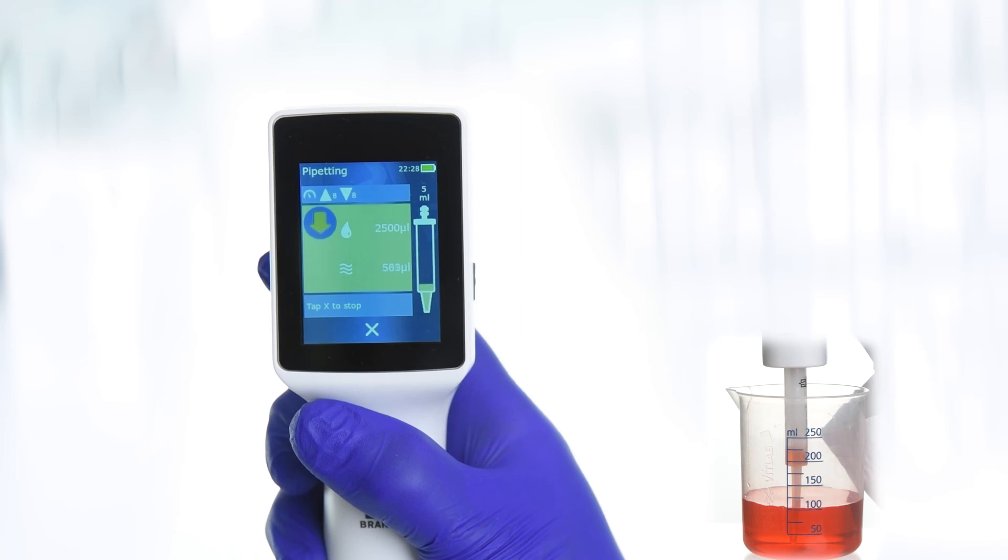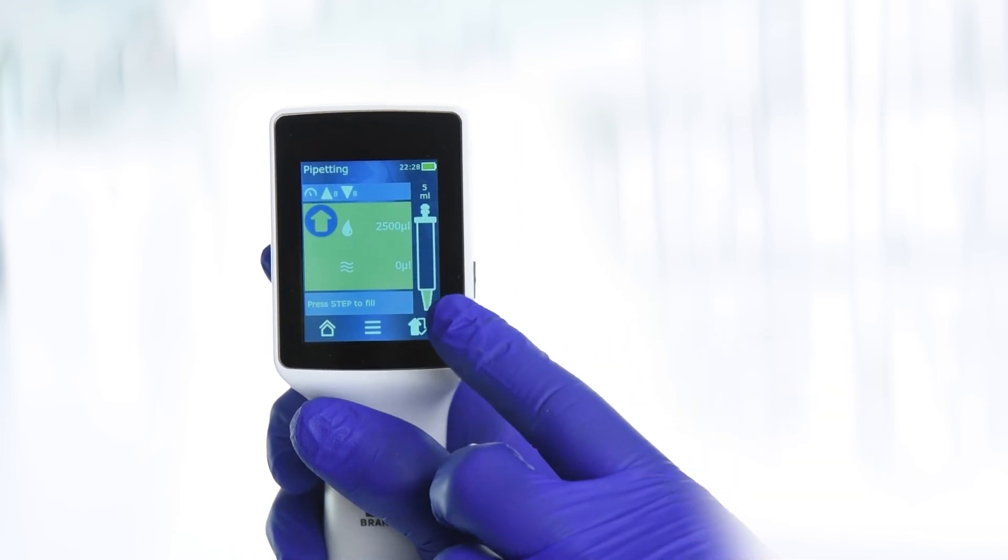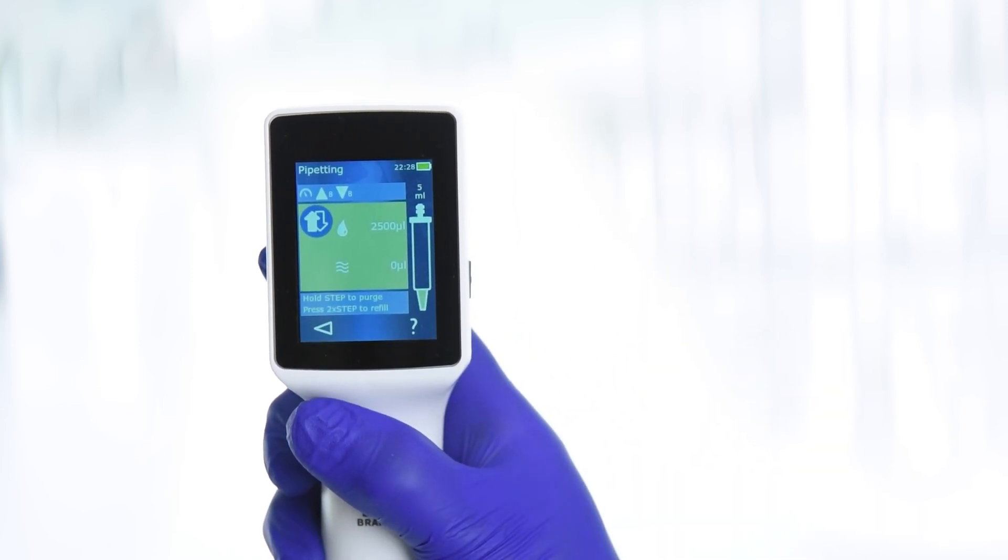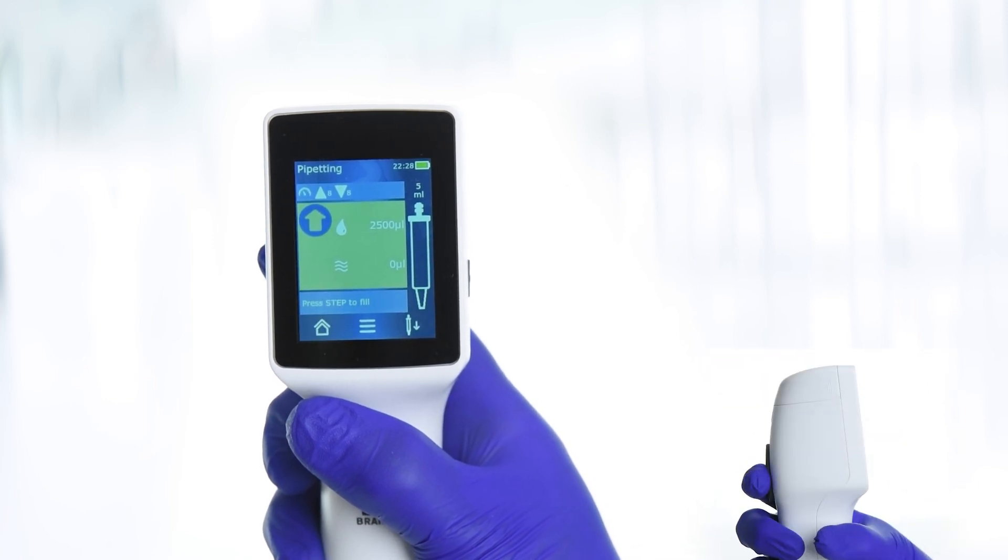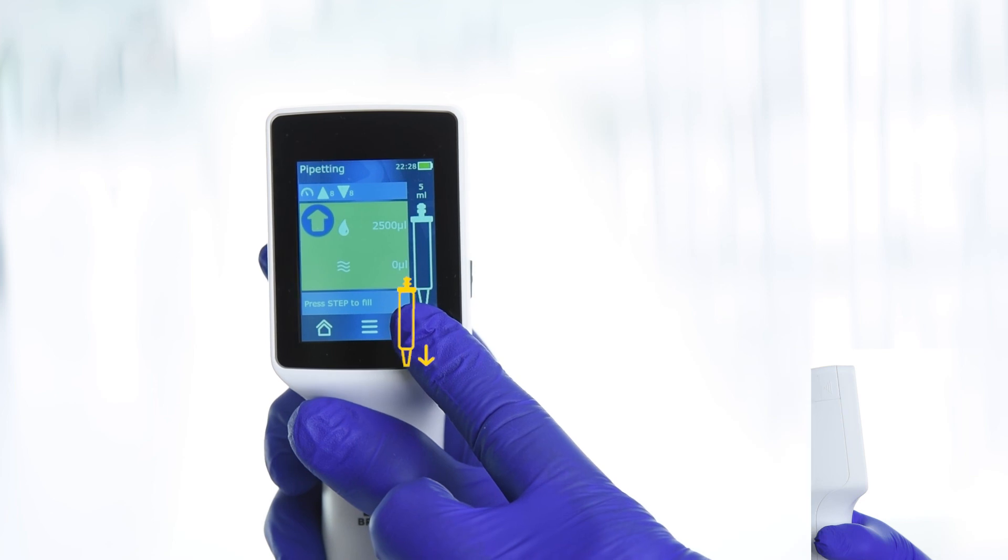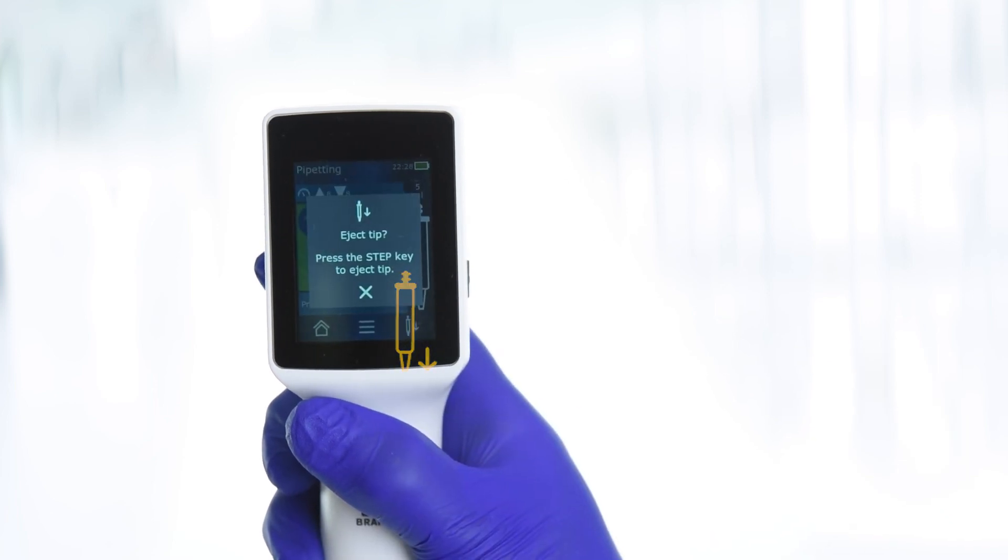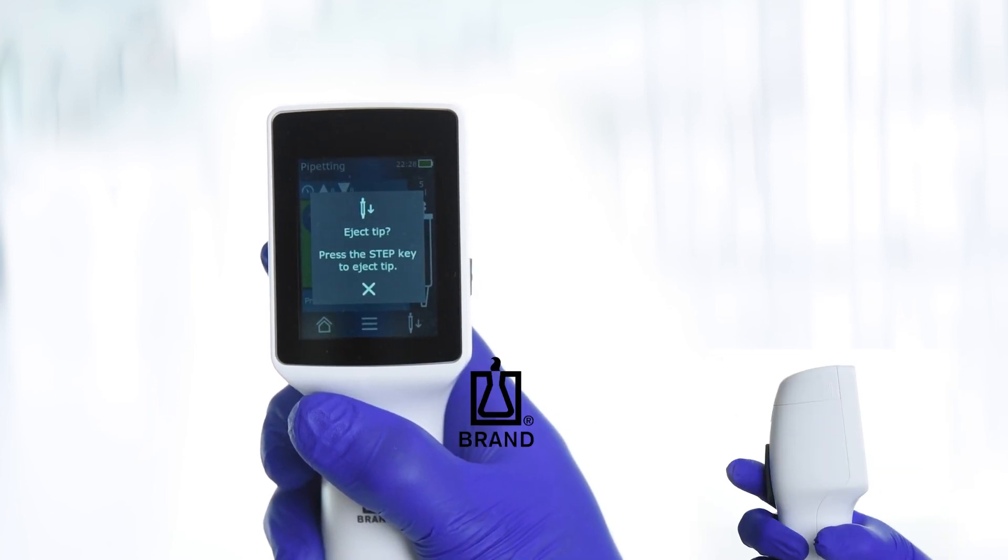To purge or empty the PDTip, first tap the up and down arrows in the bottom right corner of the menu. Next, press and hold the Step key to purge the remaining liquid in the PDTip. Tap the tip ejection icon and press the Step key to eject the tip.